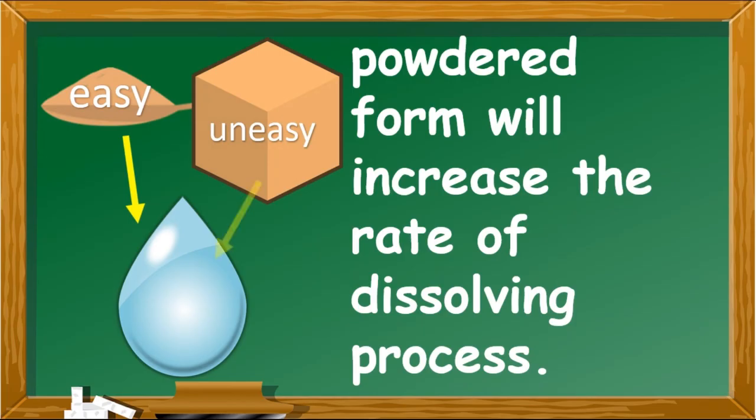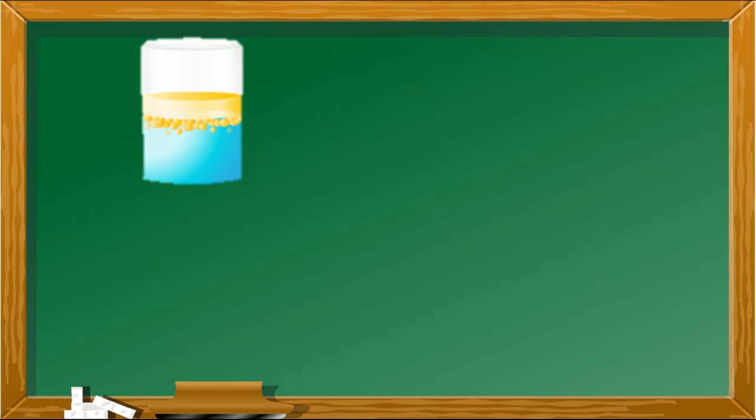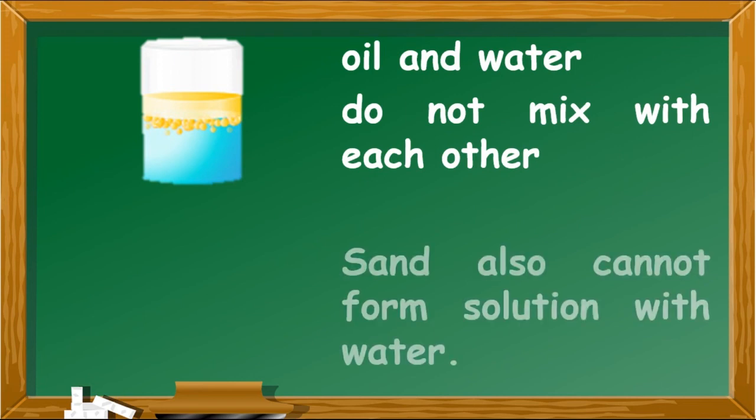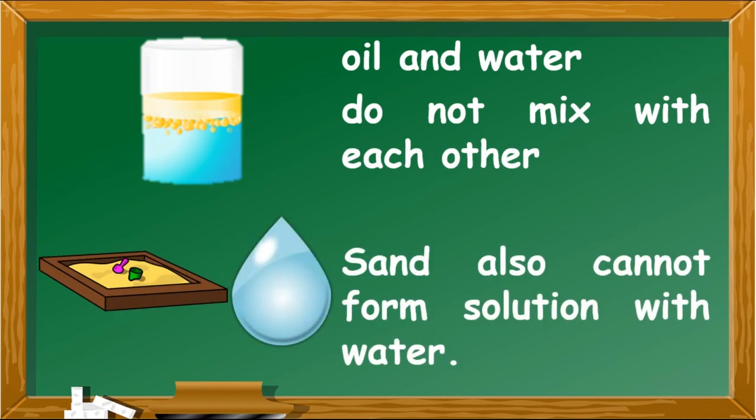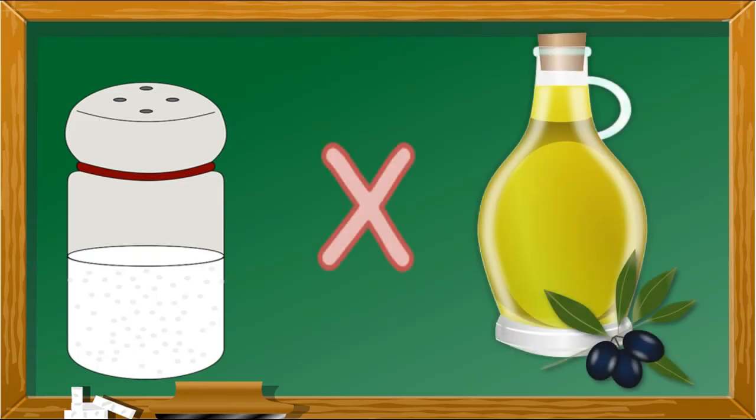The nature of the solute and the solvent determines whether they will form a solution or not. There are substances whose nature and composition do not match such that they cannot form solutions with each other. For example, oil and water have very different natures so they do not mix with each other. Sand, also for example, cannot form solution with water in the same way. Salt does not dissolve in oil, for example.